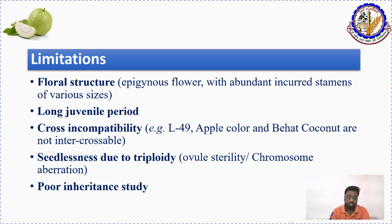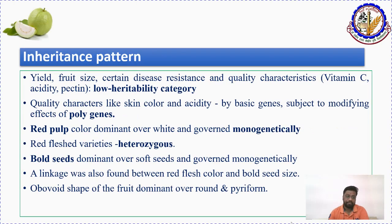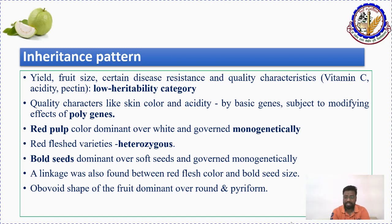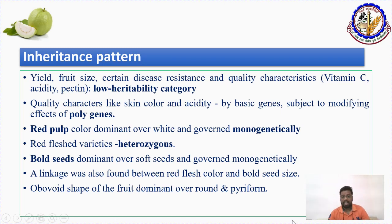Inheritance studies are very poor in guava. Many traits have low heritability, such as yield, fruit size, disease resistance, and quality attributes — so predictability of trait segregation in subsequent generations is very low. Polygenic traits include skin color and acidity. Red pulp color is a dominant trait over white and is governed monogenically. Red flesh is heterozygous, and bold seed is dominant.